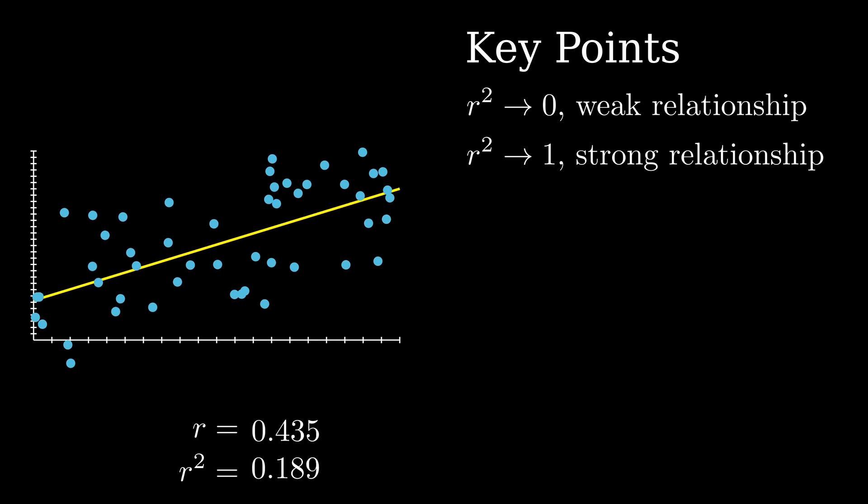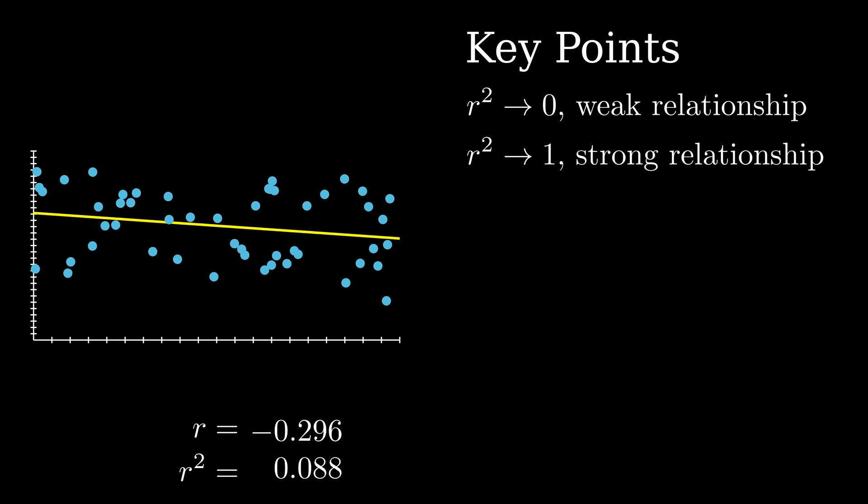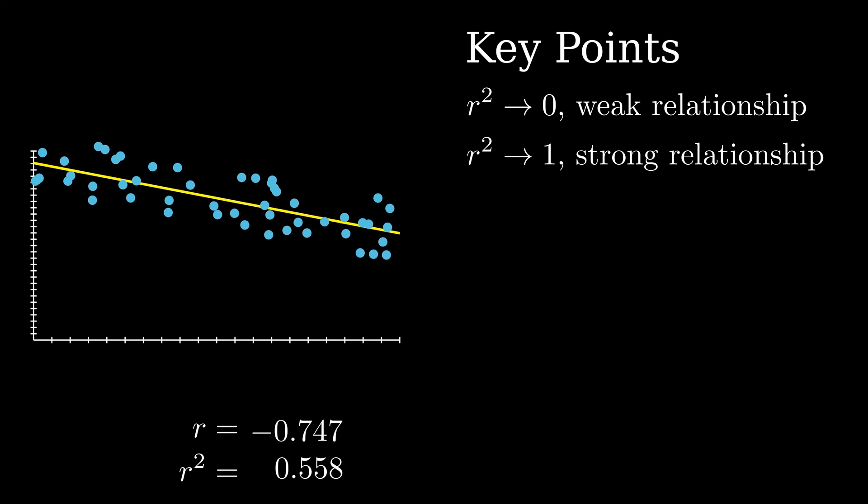And these are the key points. As r square approaches 0, it indicates a weak relationship. As r square approaches 1, it indicates a strong relationship.